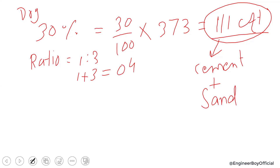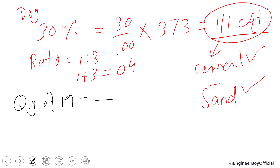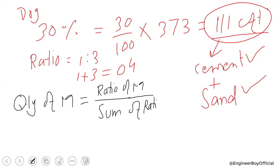There is a specific formula for this approach. To determine the quantity of any material, you take the ratio of that material, divide it by the sum of ratio, and then multiply by the dry mortar volume. Let's use this formula to determine the quantity of cement.